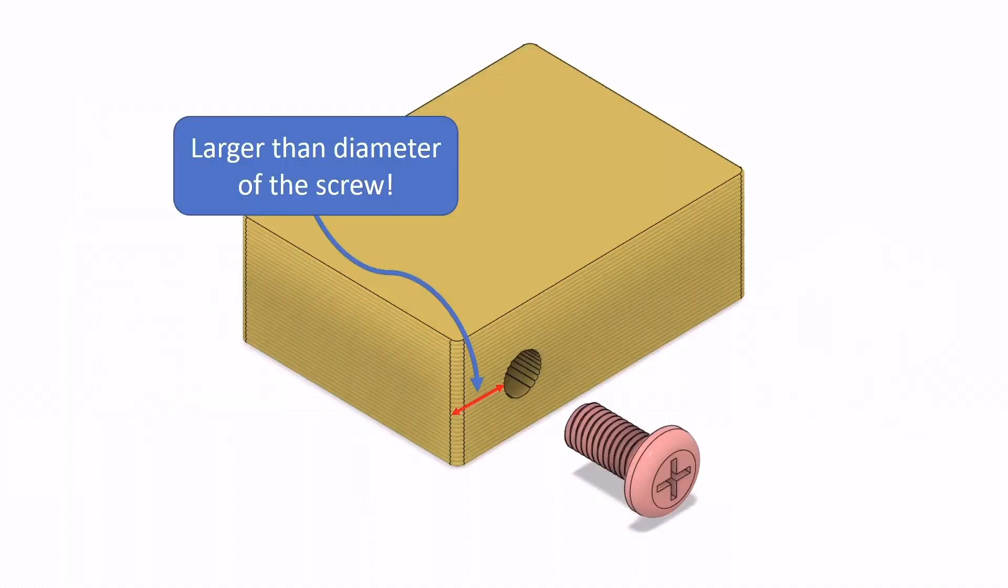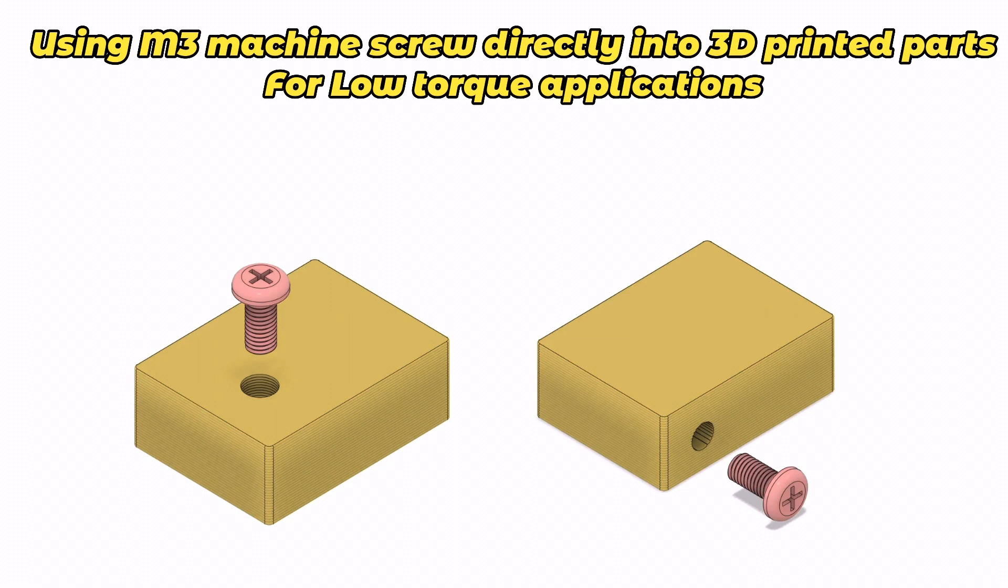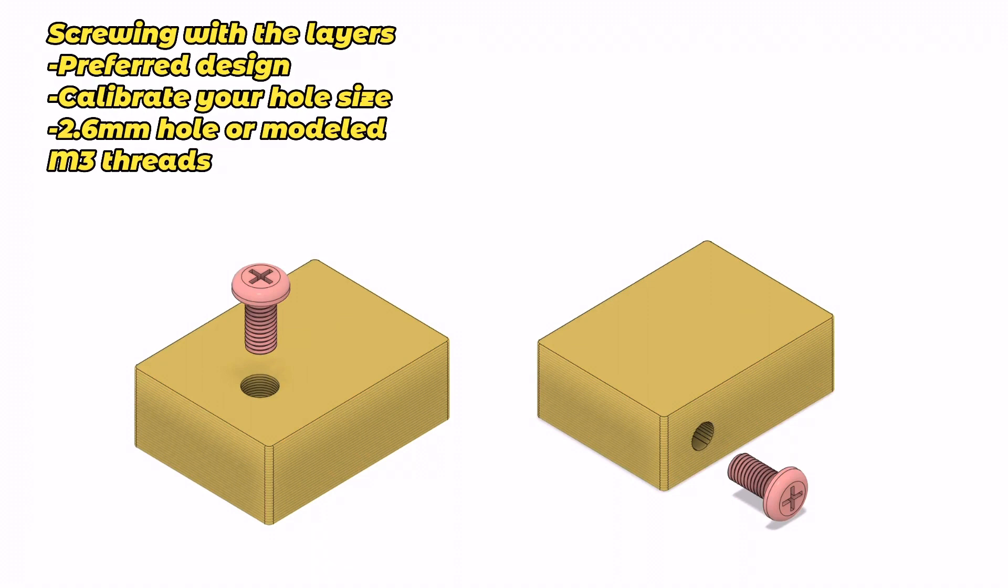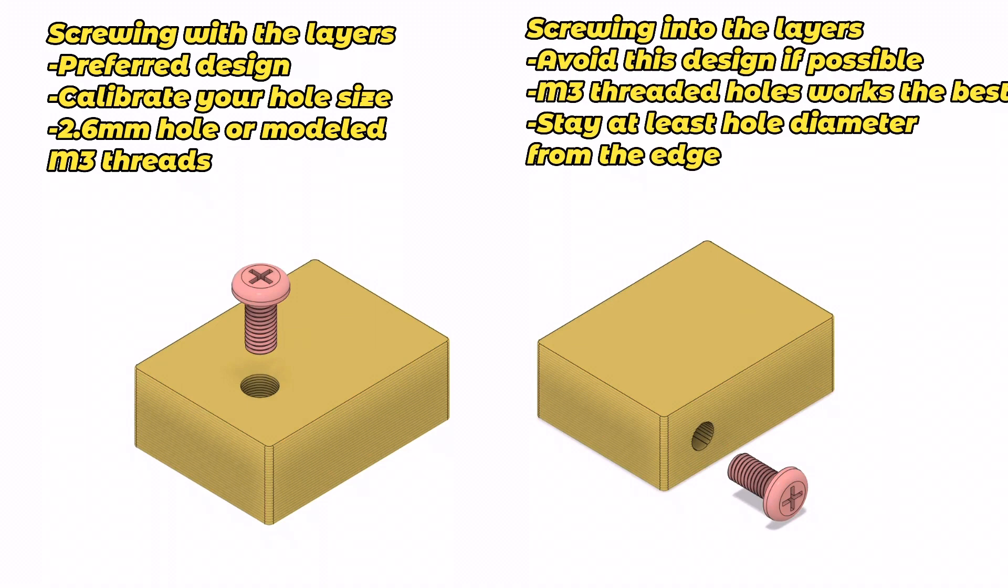One other rule of thumb, especially when designing holes into the layers, was to try and keep the hole at least the diameter of the screw away from the edge of the part. And actually the more material you can put around the screw hole, the better off you'll be. For a final summary, if you have a low torque application and you don't need a ton of reuse, you can screw directly into 3D printed parts. The picture on the left is screwing with the layers. This is the preferred design. Before you do it, you'll want to calibrate your hole size with horizontal expansion factors. 2.6 millimeter or modeled in M3 threads will give you the best results for reusability. And for the picture on the right, screwing into the layers, you should try to avoid this design if possible, but if you need to, modeling in the actual M3 threaded holes works the best, and you should stay at least the hole diameter away from the edge.